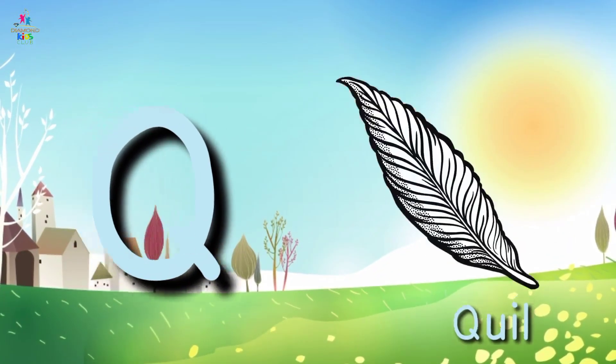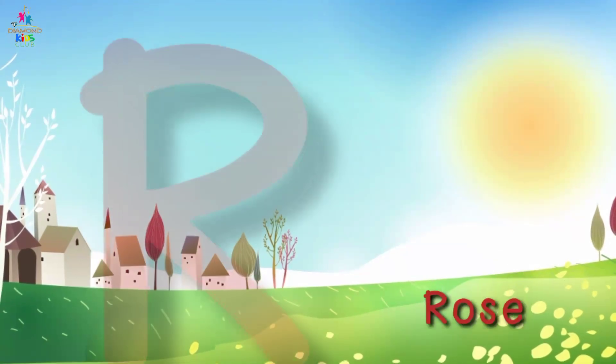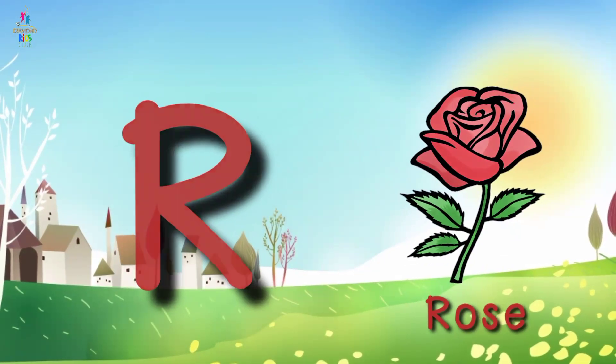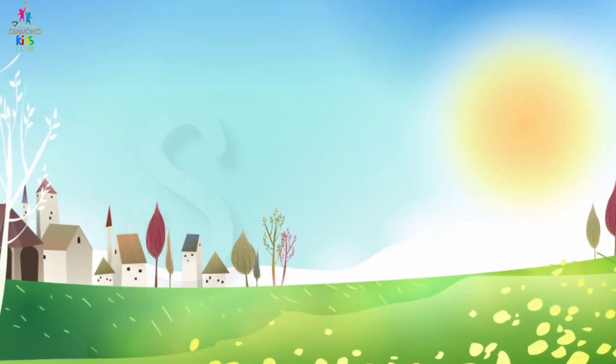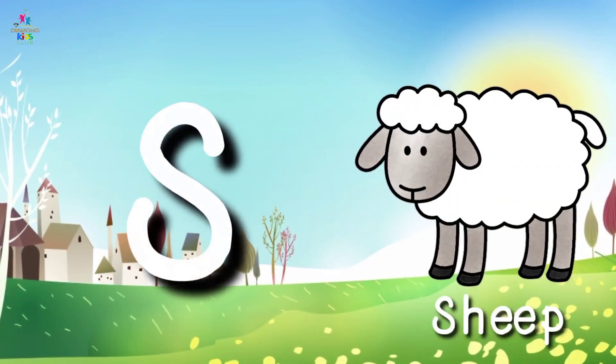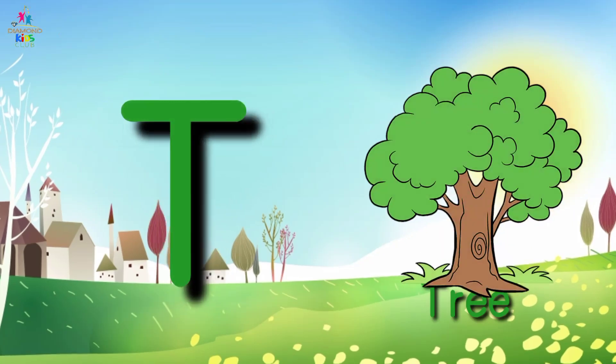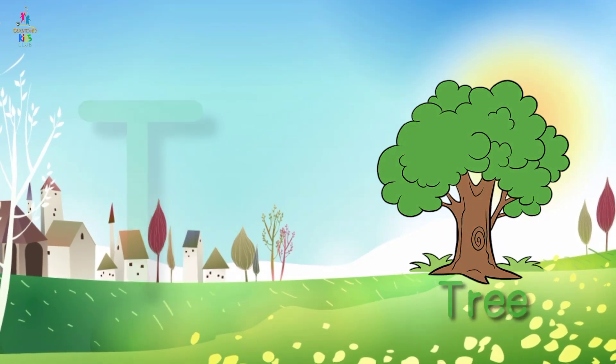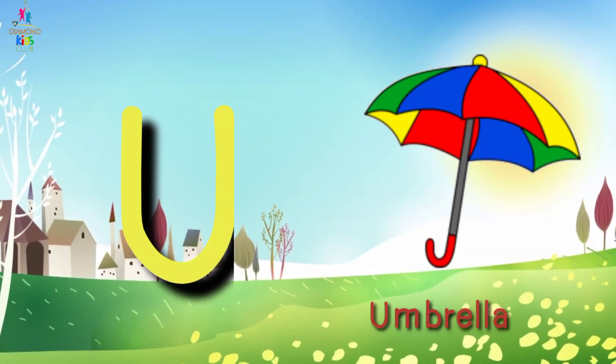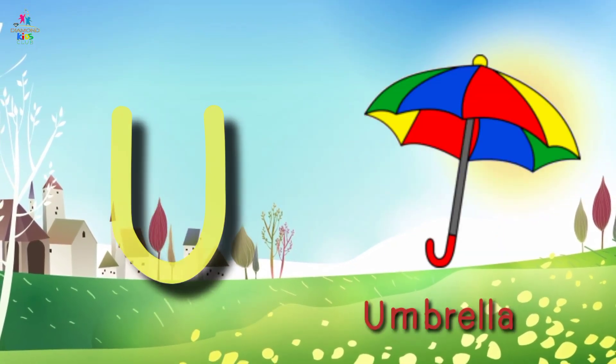Q for quill, R for rose, S for ship, T for tree, U for umbrella.